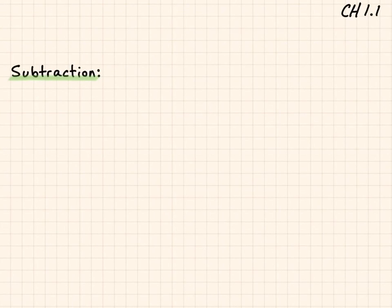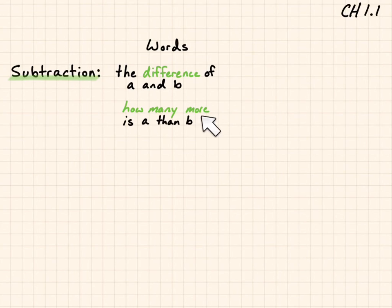This tutorial is to go over my continued notes on chapter 1.1 on subtraction. In words, we can write subtraction as the difference of A and B, where you're subtracting B from A. Also, how many more is A than B is also showing the difference, so this would be another way of writing subtraction out in words.